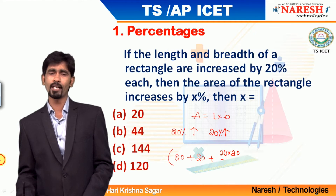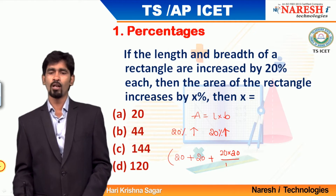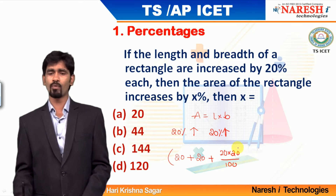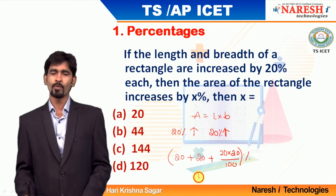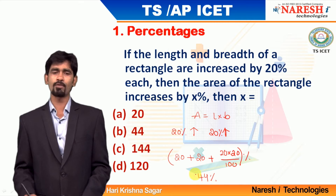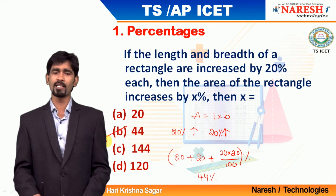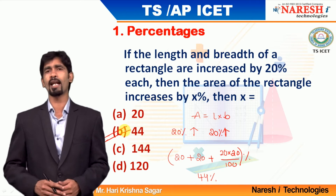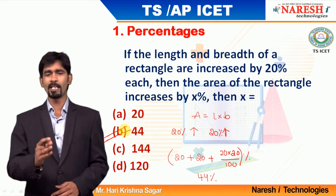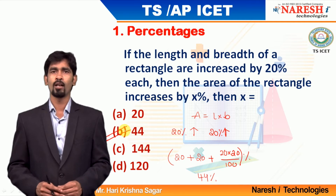That will be the overall increase in the value. 20 plus 20 gives 40, and 40 plus 4 gives 44. The percentage increase in area will be 44 percentage.